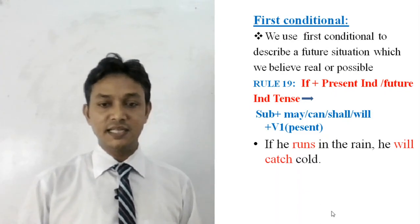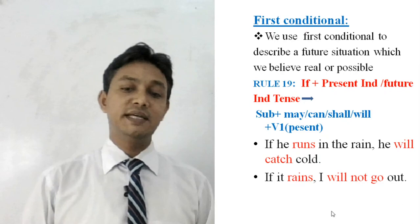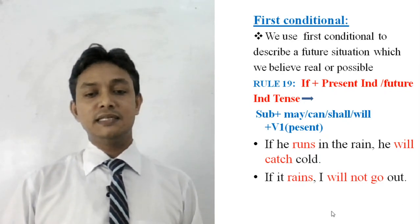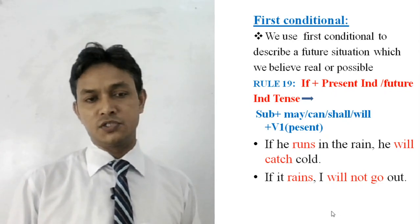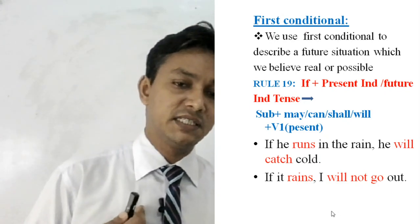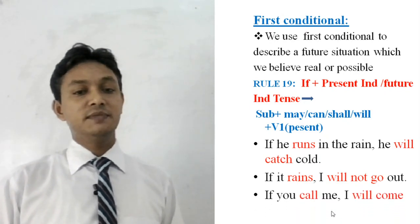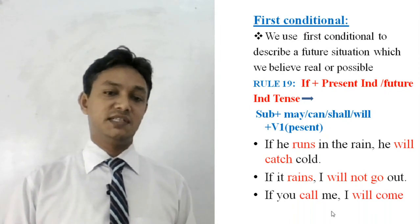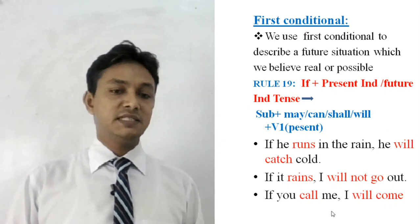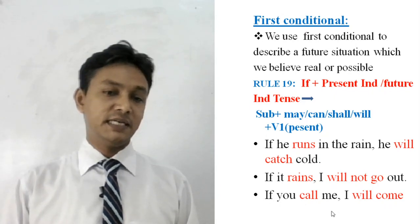Examples of first conditional: 'If he runs in the rain, he will catch cold.' 'If it rains, I will not go out.' Here the condition is possible and likely to happen — it's my decision whether I will go or not. Another example: 'If you call me, I will come.' This is a situation that is very likely to happen in reality.